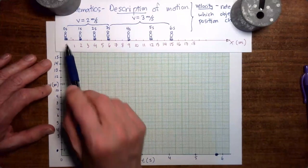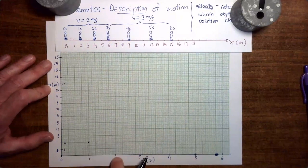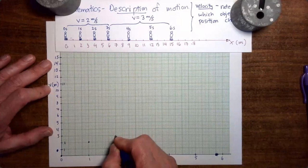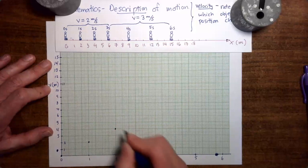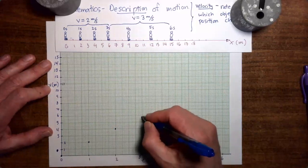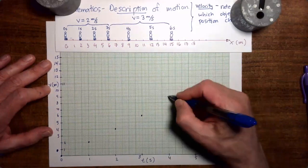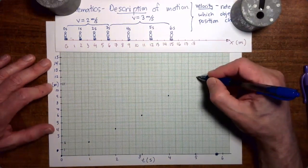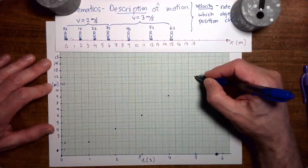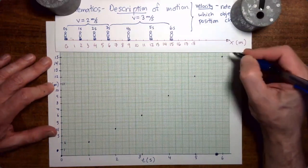At time 0, the person's position is 0 meters. At time 1 second, the position is 2 meters. At time 2 seconds, the position is 4 meters. At time 3 seconds, the position is 6 meters. At time 4 seconds, the position is 9 meters. At time 5 seconds, the position is 12 meters. And then at time 6 seconds, the position is 15 meters.